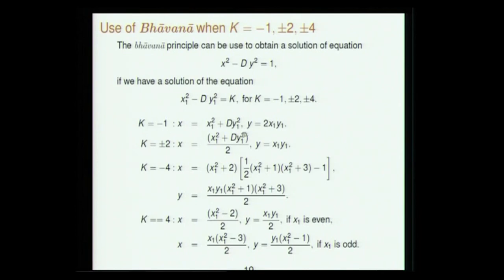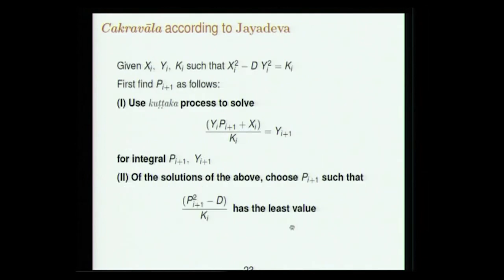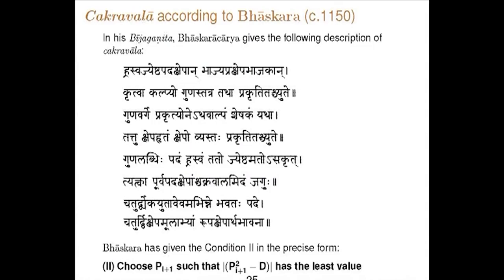Once you reach k = ±1, ±2, or ±4, you use Brahmagupta's Bhavana rather than continuing the complex procedure. This was Chakravala according to Jayadeva. Unfortunately, those verses do not clearly state how the conditions are implemented, and no examples of Jayadeva survive. Bhaskara's statement of Chakravala is simpler — given in about four verses — and he says 'Chakravada midam jagu hu,' indicating it was already a well-known method at his time. Bhaskara's key simplification: choose pi+1 such that |pi+1² − d| is minimum.